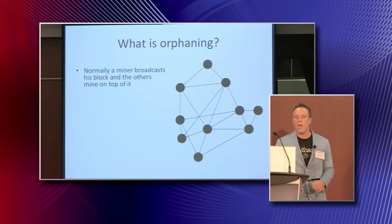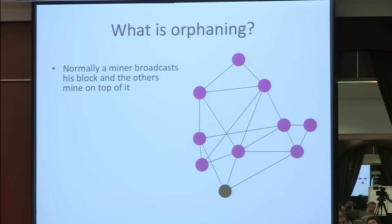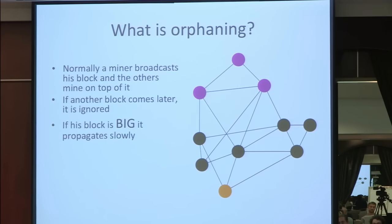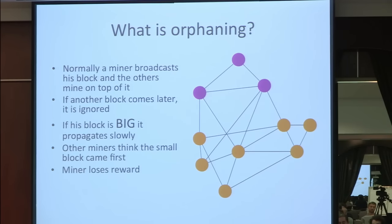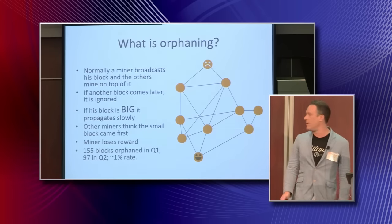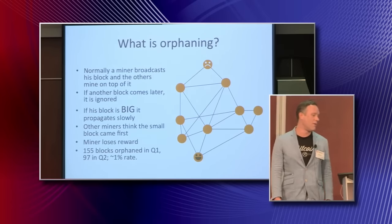So what is orphaning? Normally when a miner finds a block, he broadcasts it to the other miners, they all start happily mining away, and if another miner finds a block a little bit later, everybody ignores him — the first miner is happy and gets the block reward. Now imagine that the first miner mines a really big block; it propagates more slowly. When the second miner mines his small block, it spreads much faster, and everybody thinks the small block came first even though it didn't. The first miner loses the block reward — his block gets orphaned. Orphaning isn't some hypothetical construct; it really happens. There were 155 blocks orphaned in the first quarter of this year and 97 in the second quarter, for about a one percent orphaning rate.